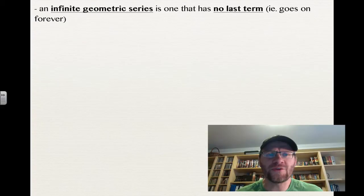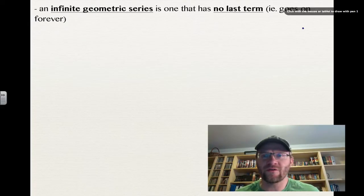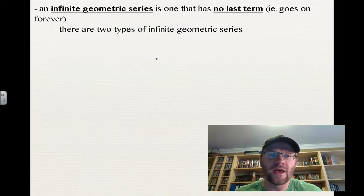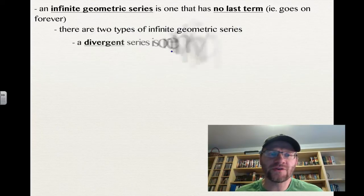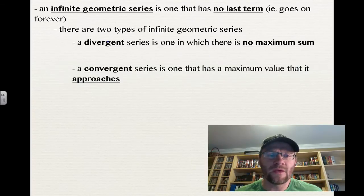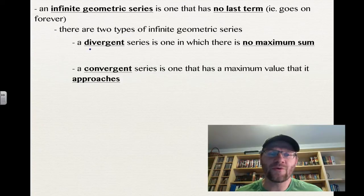So an infinite geometric series is one that has no last term, which means it goes on forever. There are two types of infinite geometric series. The first one is a divergent series, in which there will never be a maximum sum. And the second one is a convergent series, one that has a maximum value that it approaches.